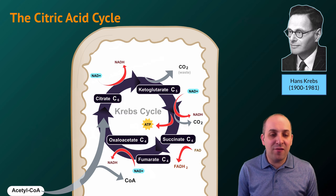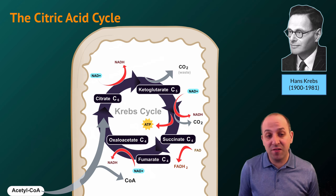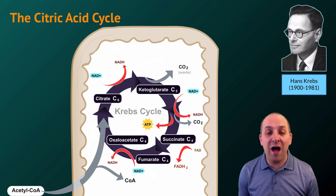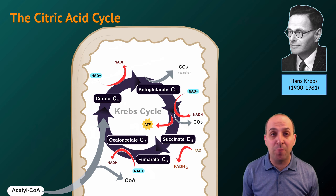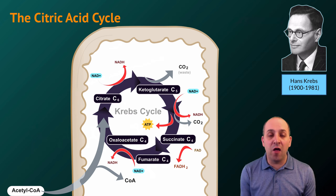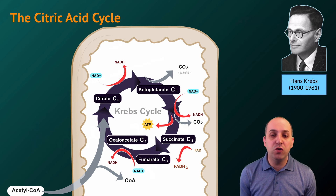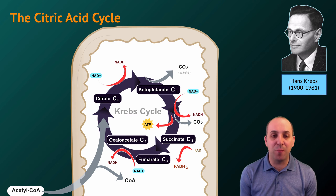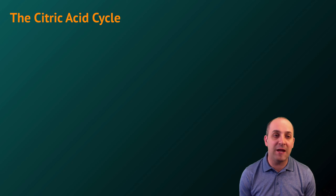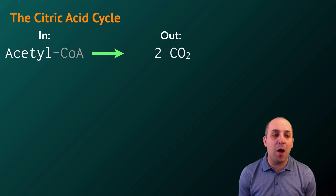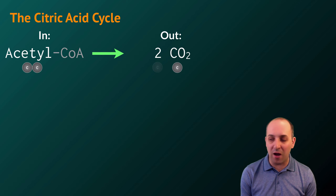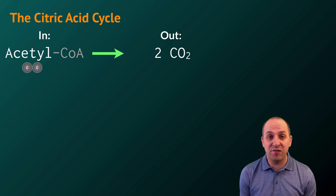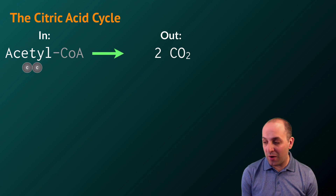Now that we have acetyl coenzyme A, let's follow it into the mitochondrial matrix and see what happens in the citric acid cycle. The citric acid cycle is also known as the Krebs cycle, because Hans Krebs was a scientist who elucidated a lot of the mechanisms in the process. You do not need to pay attention to the cycle at the level of resolution shown here — what you do need to pay attention to are the inputs and the outputs. We put in a molecule of acetyl CoA, and the carbons on that acetyl group are converted into two carbon dioxide molecules that leave the cell as waste. At that point, all of the carbon from our original glucose has been fully oxidized and exits the cell.